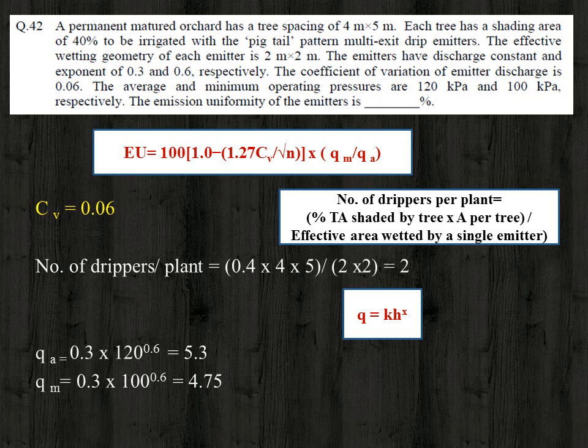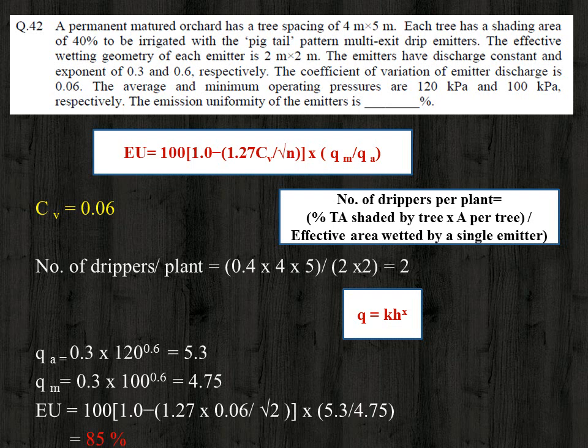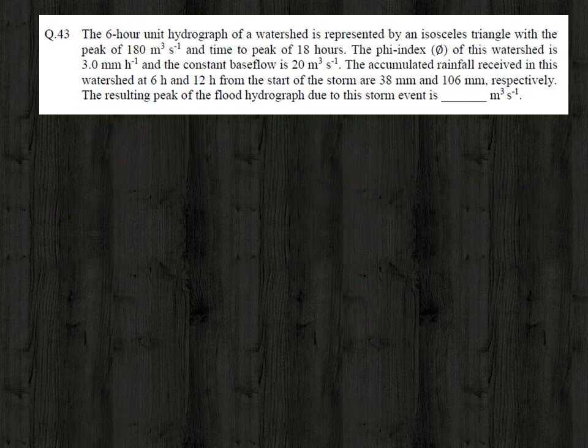Substituting the pressure values in the equation, we get qa as 5.3 and qm as 4.75. Now substituting all values into the emission uniformity equation, we get the emission uniformity as 85 percent.